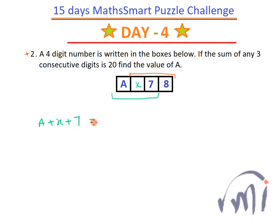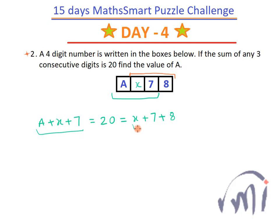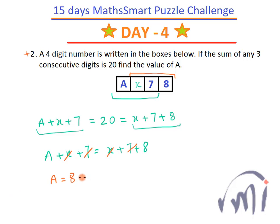That means A plus X plus 7 — the sum of the first three digits — is equal to 20. And this is also equal to the sum of the last three digits, that is X plus 7 plus 8, which is also equal to 20. So if you equate these, since both sides equal 20, I can write A plus X plus 7 equals X plus 7 plus 8. The X and 7 cancel from both sides, which means A is equal to 8.